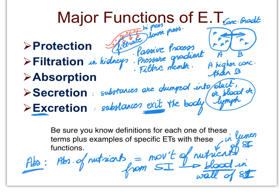A word of caution about defining terminology: you can't use a version of the new term in your definition. For instance, if someone asks you to define absorption, you can't say 'it's to absorb stuff' — that doesn't help someone who doesn't know the word. Always use different terms than the actual terminology you're defining. This wraps up our introduction to the epithelial tissues, and next we'll take a look at the major characteristics of the epithelial tissues.